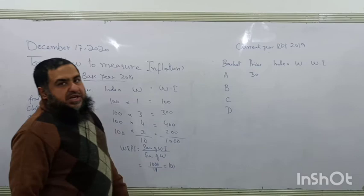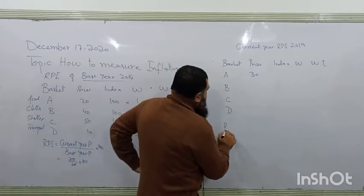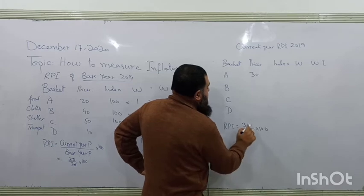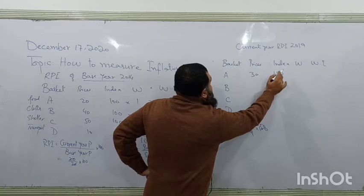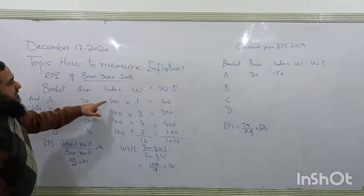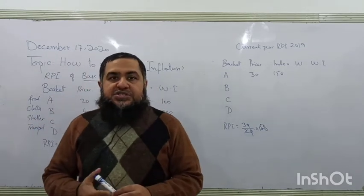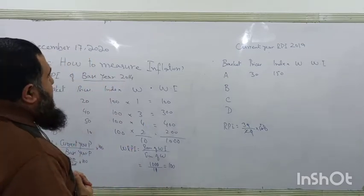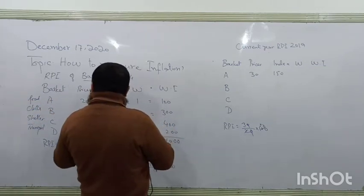Food prices have risen from $20 to $30. The retail price index for food = (30 ÷ 20) × 100 = 150, meaning food prices have increased by 50%.